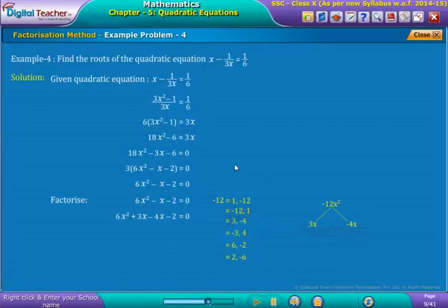So, the quadratic equation can be written as shown on screen. Now, taking 3x as common from the first two terms and minus 2 from the next two terms, we get factors as shown on screen. Now, equating both the factors equal to 0, we get x values as 2 by 3 or minus 1 by 2.